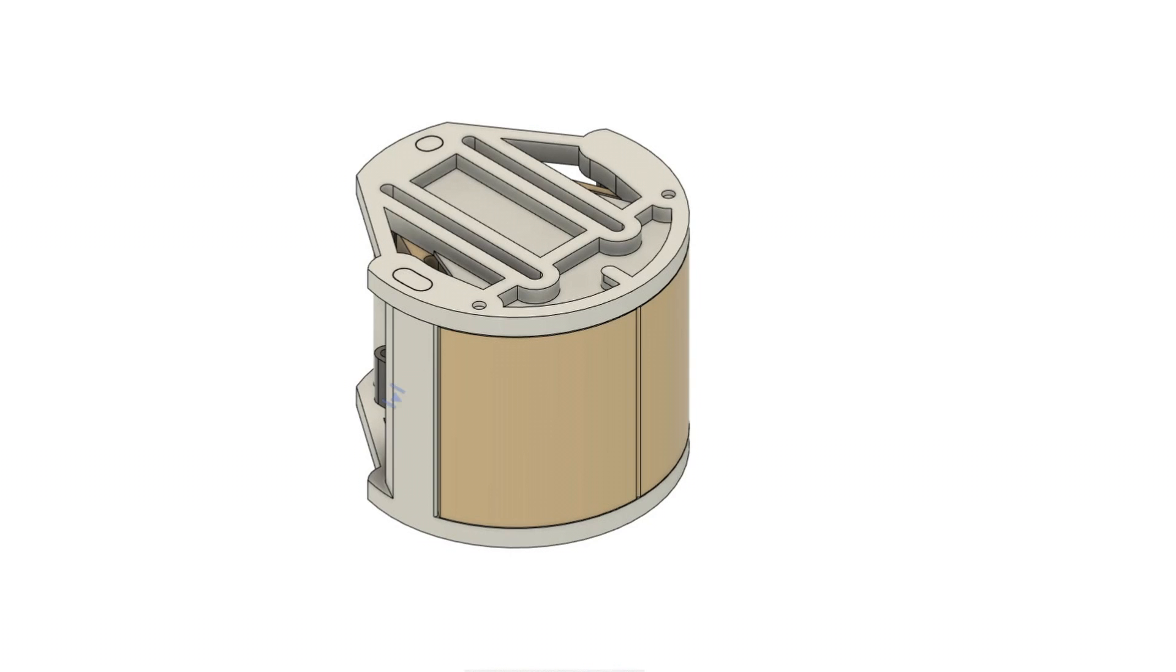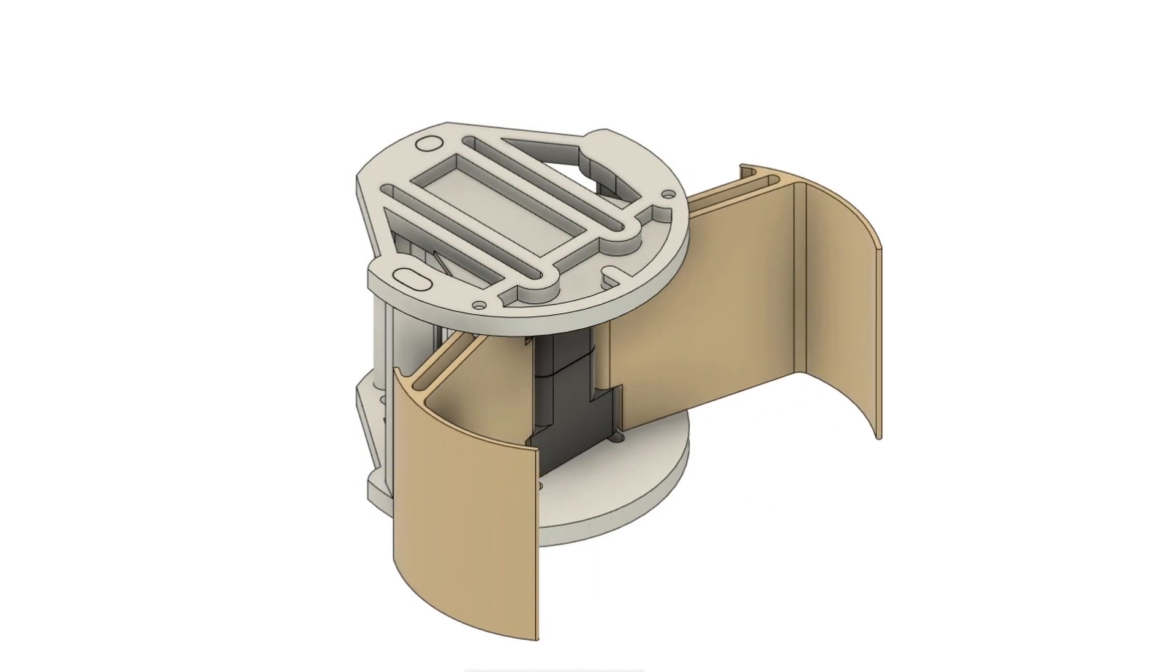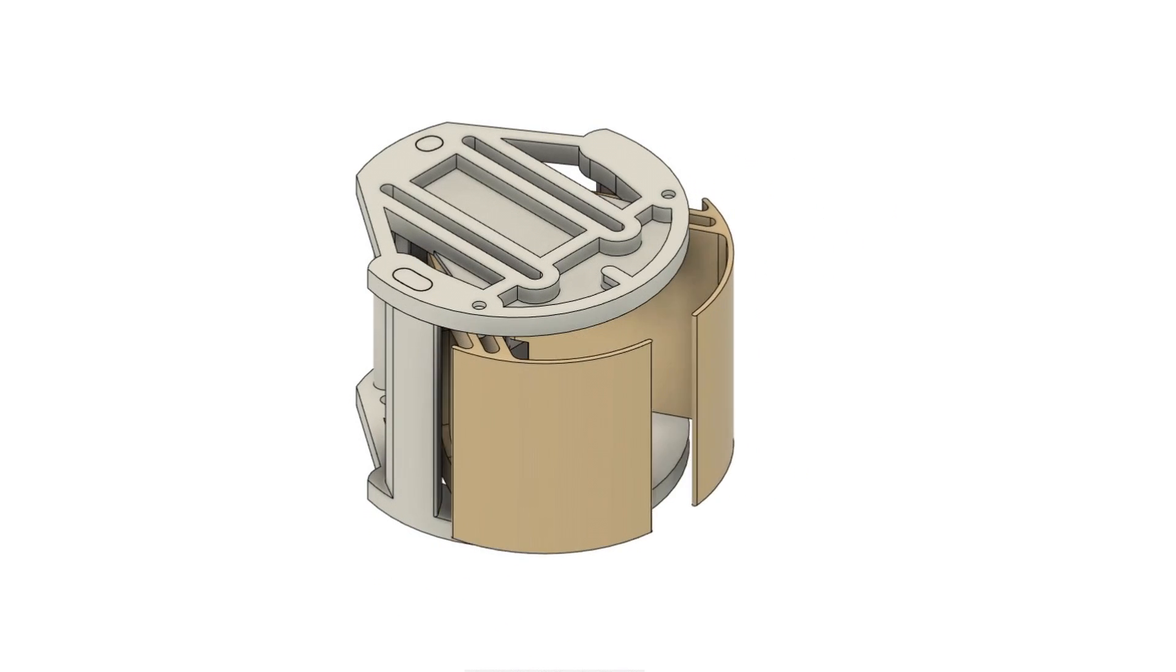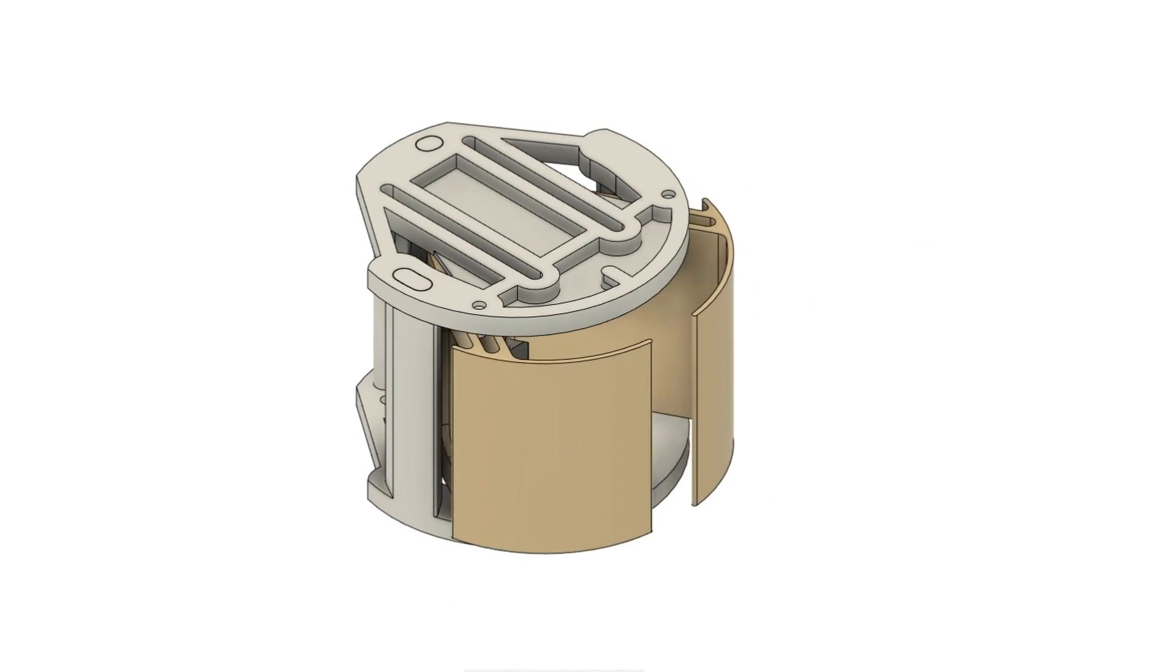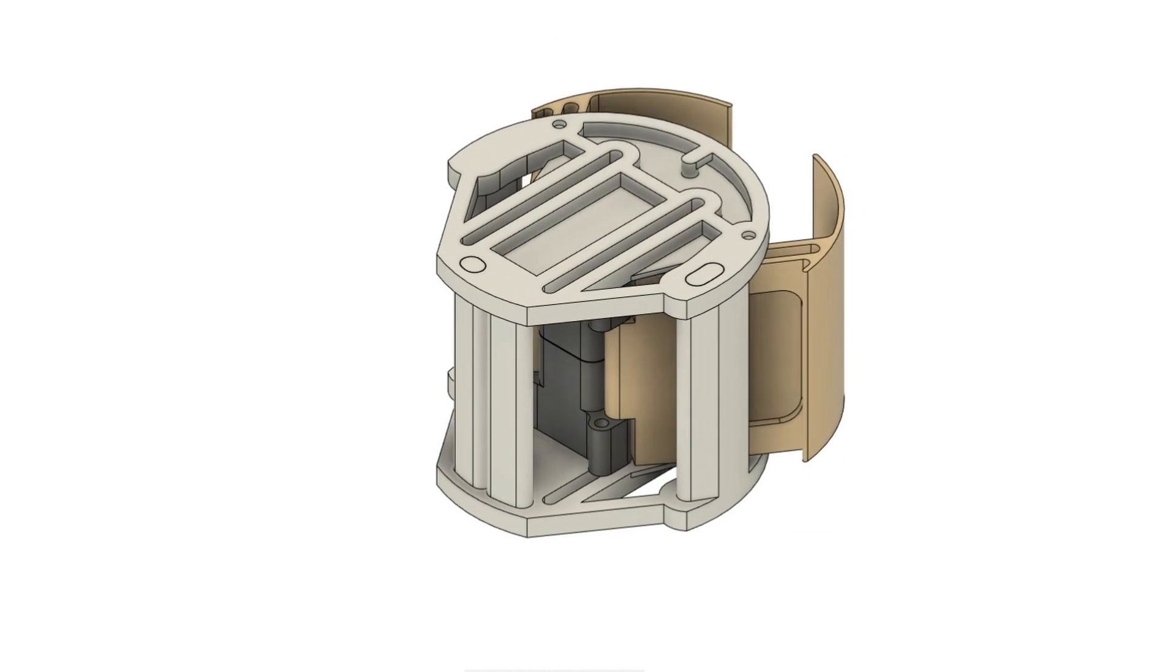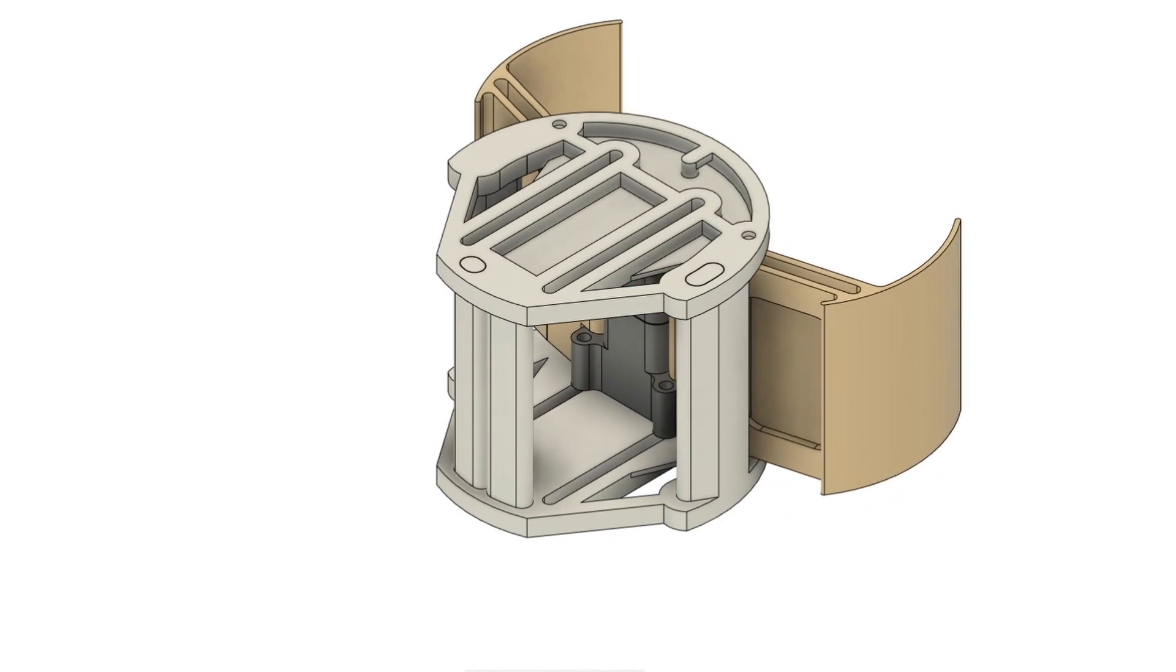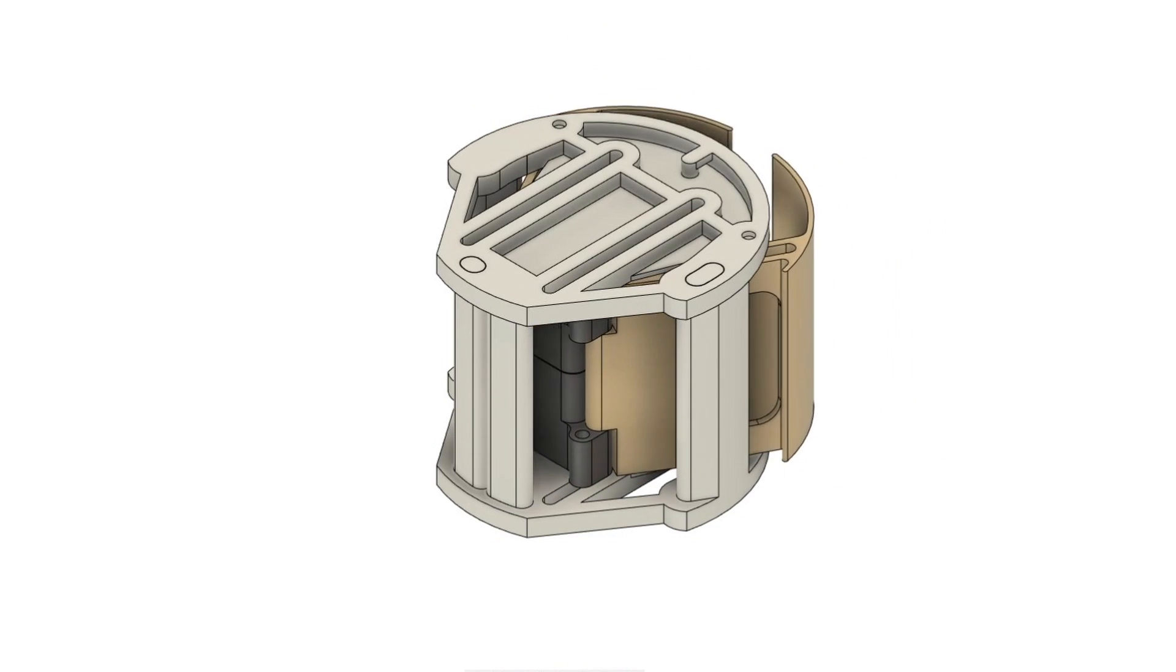The last important part is the parachute system. Usually model rockets use a tiny gunpowder charge to eject a parachute with a nose cone. This design is different. The idea is that we have two doors and a pusher, all acting together in a single motion and ejecting the parachute from the side of the rocket.